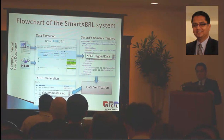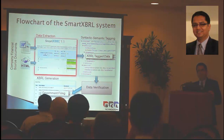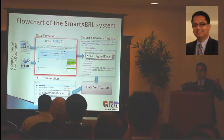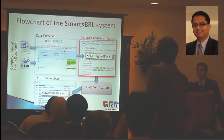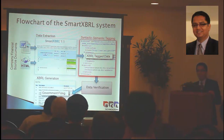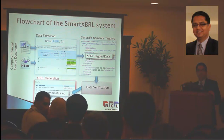This is the overall flowchart of the SmartXBRL system. We take the HTML file, then do data extraction where we look into the content of the 10-Q and try to find relevant information to be extracted. One of the methods is syntactic-semantic tagging. For example, we take an initial table such as cash flow, go into the field center, find the concept, and try to tag it. It then gets verified by macro experts and we generate the XBRL file for the SEC submission.